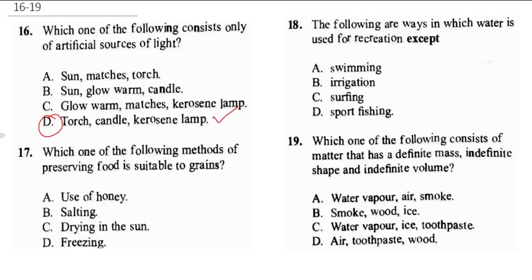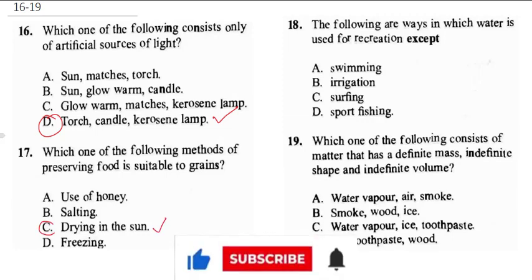Question 17 asks which method of preserving food is suitable for grains. One of the best ways to preserve grains is to dry them in the sun. Salting does not work for grains, freezing will spoil them, and use of honey can also spoil them. So the correct answer is drying in the sun.